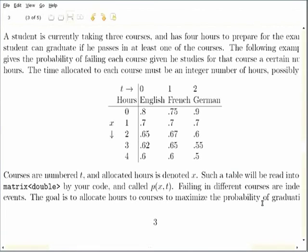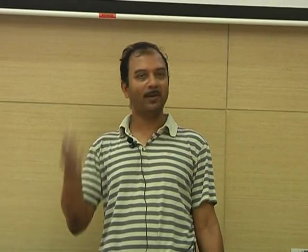And here's a table of, if you study that subject for so many hours, what's the probability of failing it? So, if you don't study at all, you'll fail English with the probability of 0.8. But if you study English for four hours, you'll only fail with probability of 0.6. Now, the first thing that's immediately clear from the table is in this particular example, that the probability of passing increases as you study. This is not always true in real life, but at least here it's monotonically decreasing. The failure probability is decreasing. So, clearly you want to use up all your four hours studying and not doing something else. But the question is how to allocate, and it's not obvious.